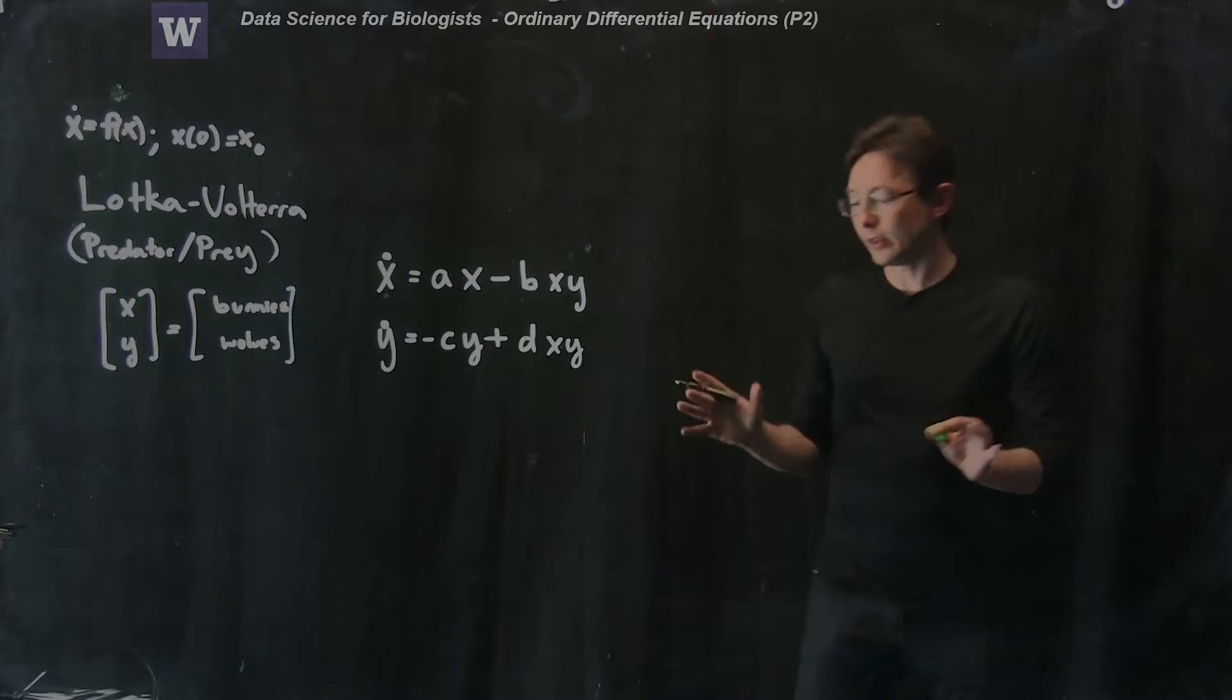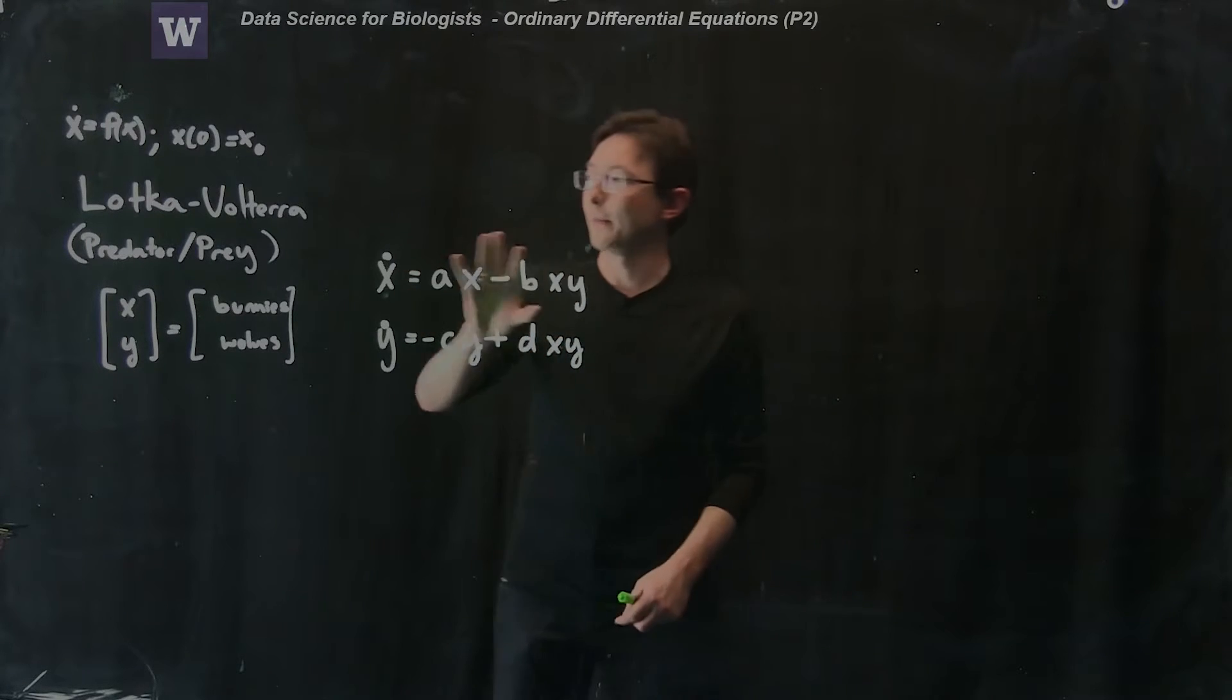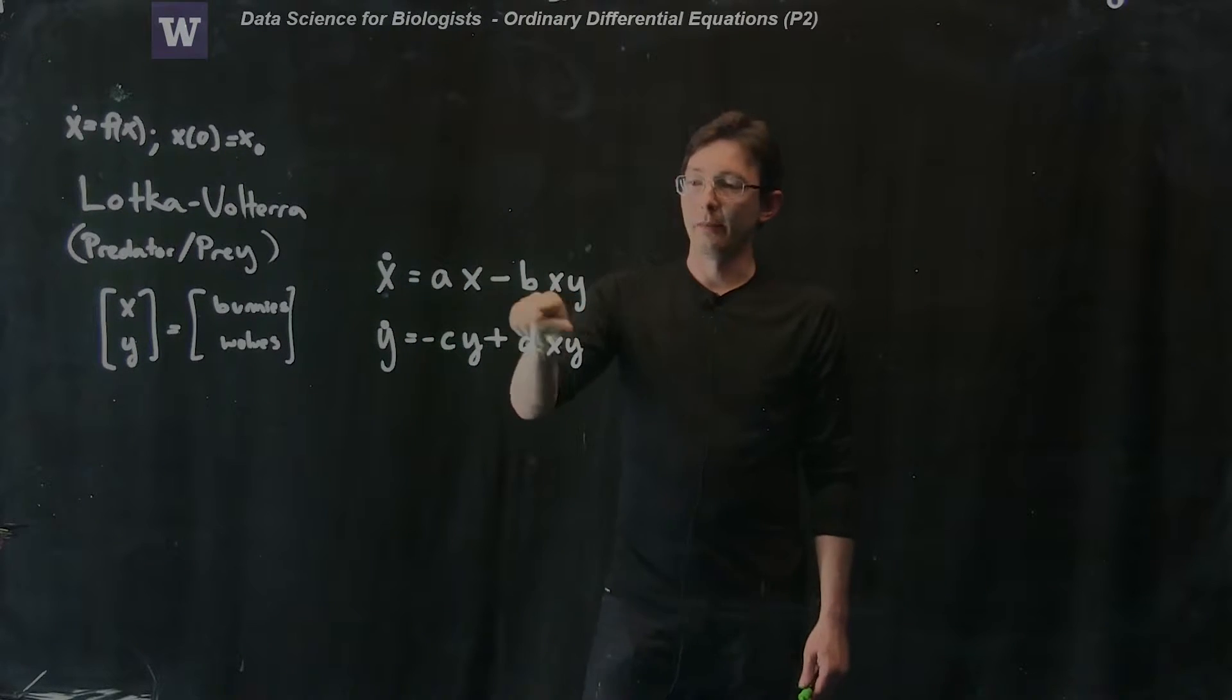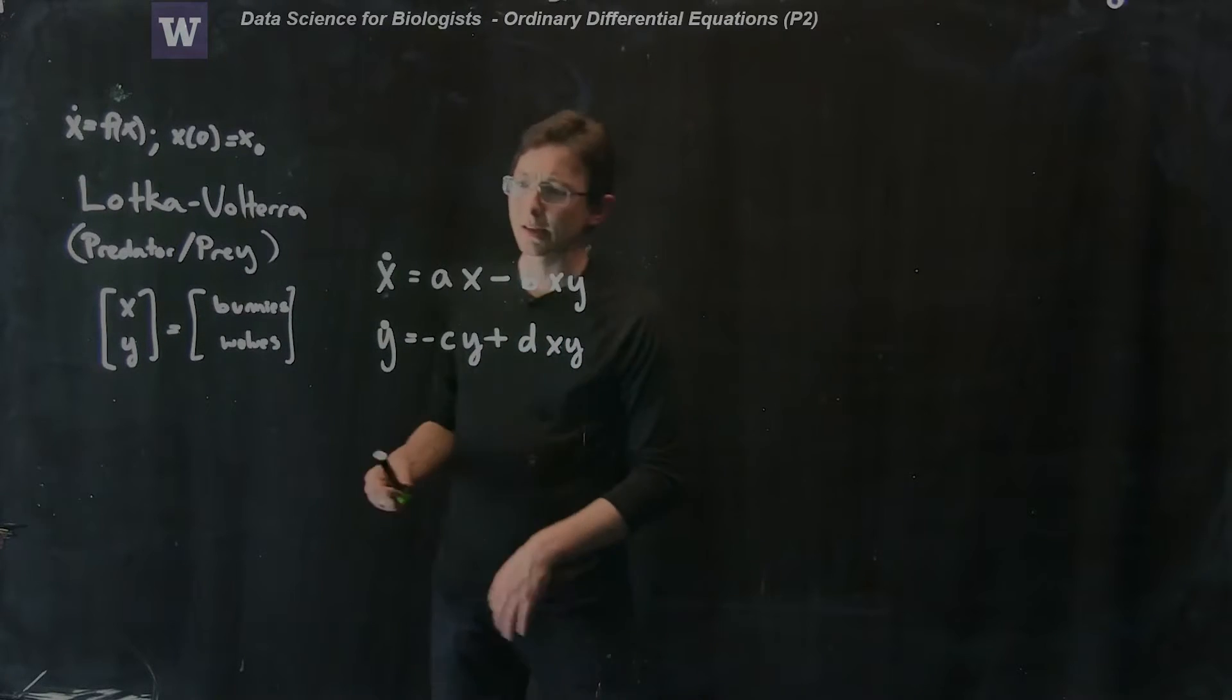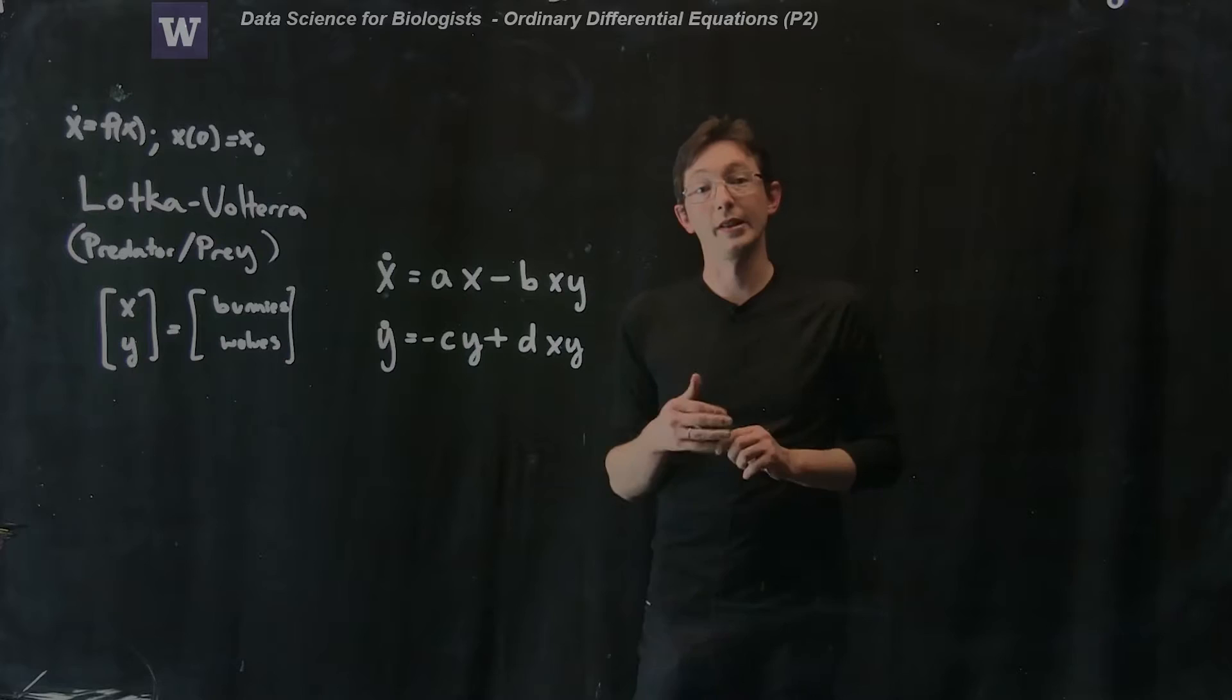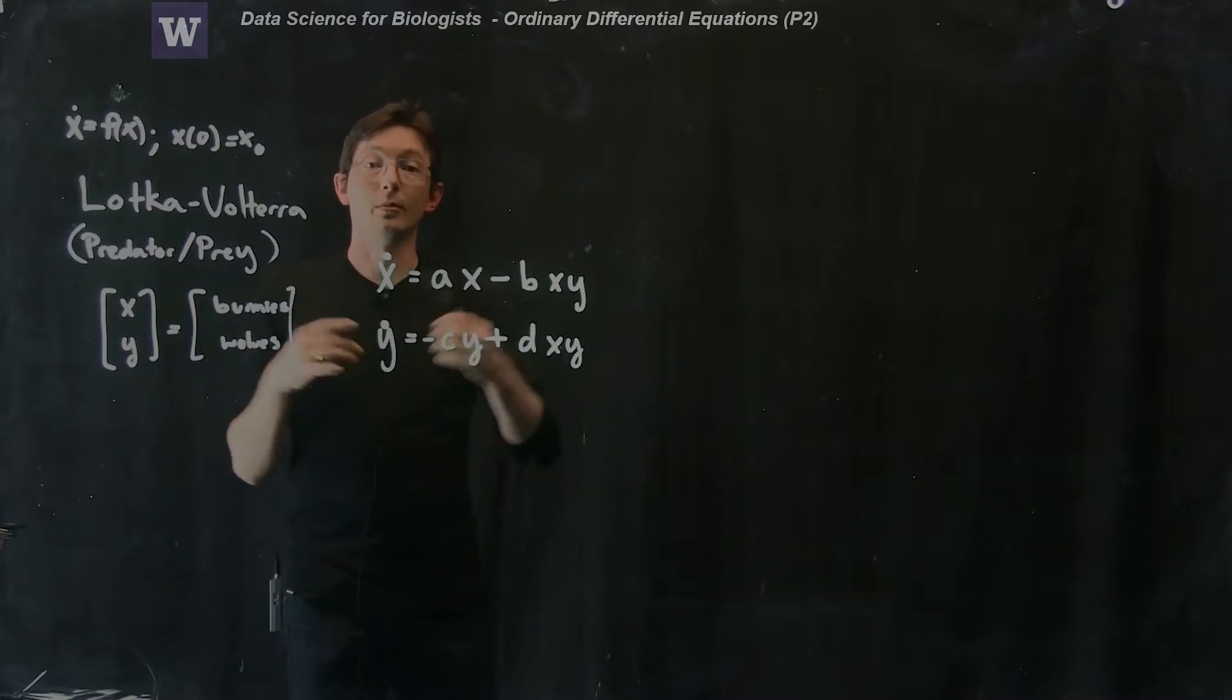This is a really contrived toy model. No one really thinks that this exactly describes any physical system. But what's beautiful about this is that Lotka and Volterra wrote down a very simple model with a couple of terms: exponential growth, exponential decay, bunnies getting eaten, wolves eating and then reproducing. And with this very simple model, you can actually reproduce a lot of the interesting phenomenon that you actually see in real predator-prey systems. This is a real success story in modeling or reduced modeling. This is a reduced representation of a real complicated system.